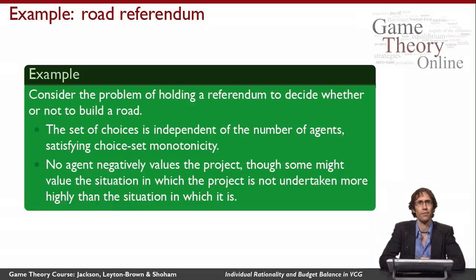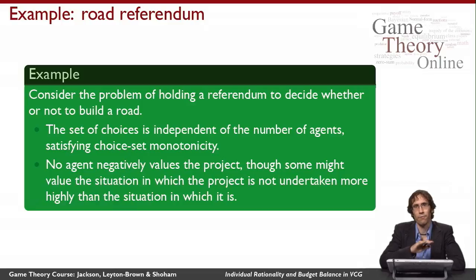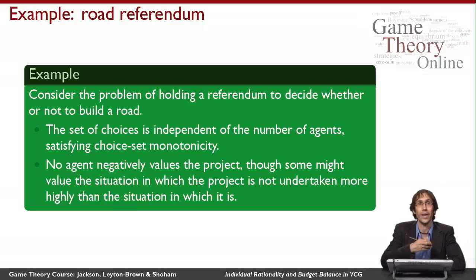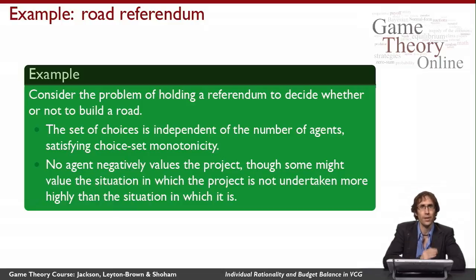Let's look at two examples of realistic scenarios that satisfy both of these properties. The first is the road building referendum problem, where we want to have a vote between agents to decide whether or not to build a public good like a road. The set of choices has nothing to do with the number of agents because the two choices are simply that the road gets built or it doesn't. So the choice set is monotonic — it just doesn't change with the number of agents, which satisfies the weak subset condition. And if we assume no agent negatively values the project, that gives us no negative externalities.